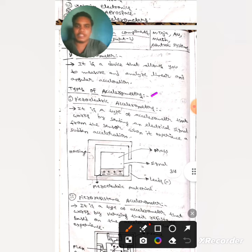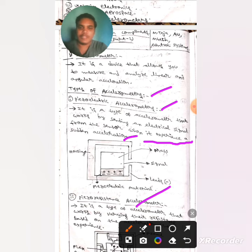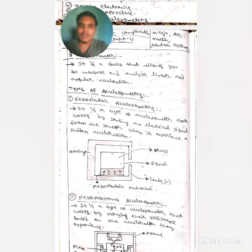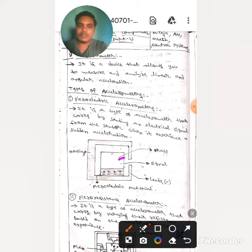Let's discuss about types of accelerometers. The first one is piezoelectric accelerometer. It is a type of accelerometer that works by sending an electric signal from the sensor when it experiences sudden acceleration. If you observe, this only represents piezoelectric accelerometer. So this one is mass, this one is signal, this one is LED, and this one is housing.